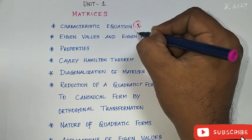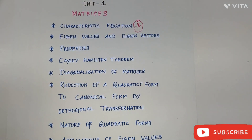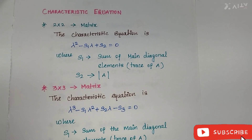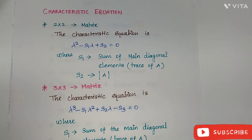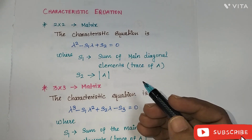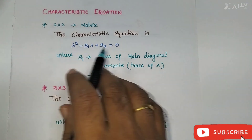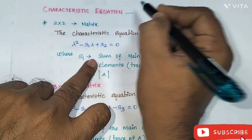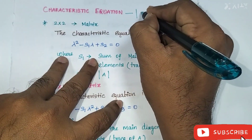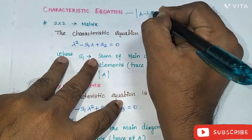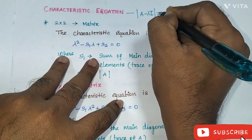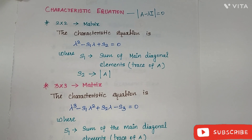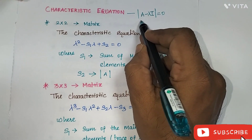So first I am going to start the characteristic equation. How to find the characteristic equation for a given matrix — you will have a 2×2 matrix and a 3×3 matrix. Before that, the characteristic equation general term we can write as: determinant of (A minus λI) is equal to zero. This is our characteristic equation. But usually we are not going to apply this formula directly.